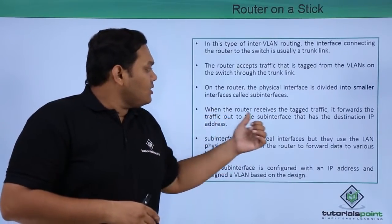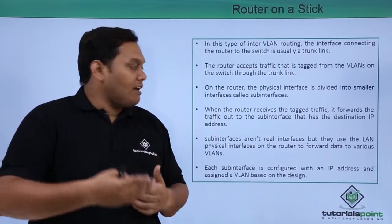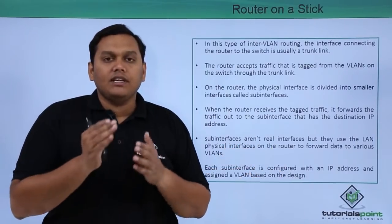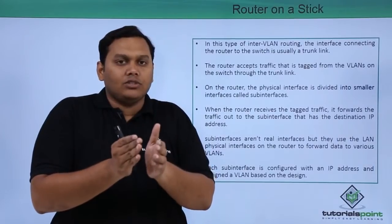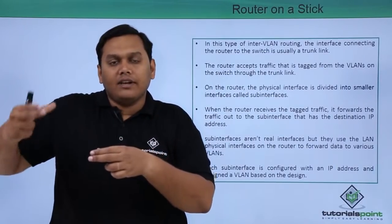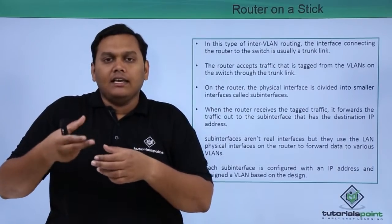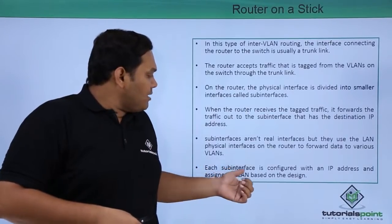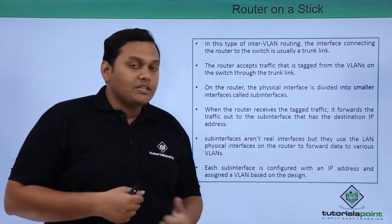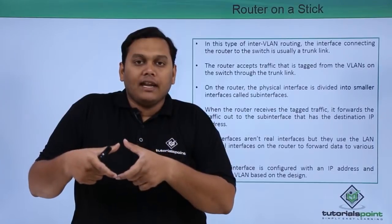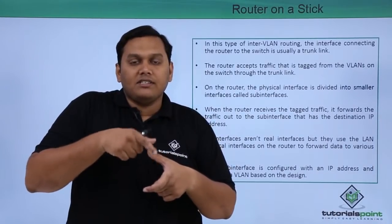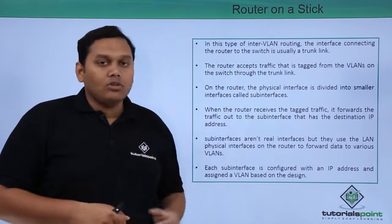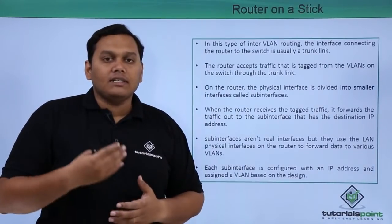When the router receives the tagged traffic, it forwards the traffic to the sub-interface that has the destined IP address. The sub-interfaces are not real physical interfaces — only one main physical interface is connected to the switch, which is subdivided into sub-interfaces. They use the physical trunk link to transfer traffic to the destined IP address. Each sub-interface is configured with an IP address and assigned to a VLAN based on the design. This is about router on a stick. In the next video, we will discuss dynamic routing protocols.